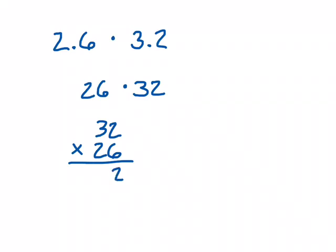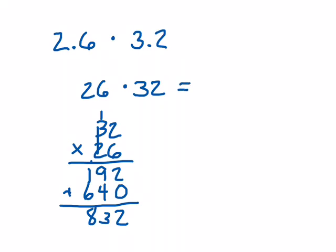6 times 2 is 12, carry the 1. 6 times 3 is 18 plus 1 is 19. I'm going to make sure I remember my place holding zero down here. 2 times 2 is 4, 2 times 3 is 6, and then I finish up by adding it. 2 and 0, 9 and 4, 1, 1 and 6, so 832.